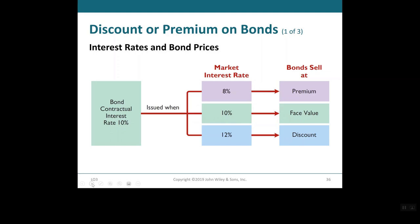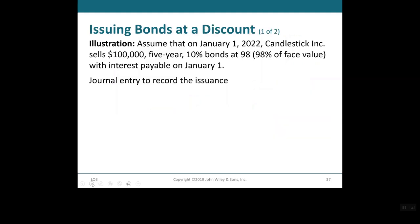In the previous illustration, we assumed the stated rate and the market rate were the same, but that's not always the case. The contractual or stated interest rate is the rate applied to the face value to determine annual interest paid. The market or effective interest rate is the rate investors demand for loaning funds to the corporation. Bonds sell at face value only when the contractual and market interest rates are equal. Since market rates change daily, when they differ, bonds will sell above or below face value.